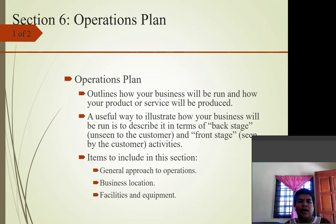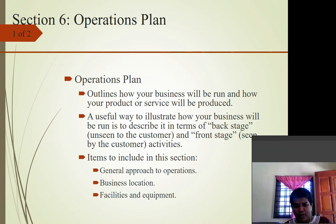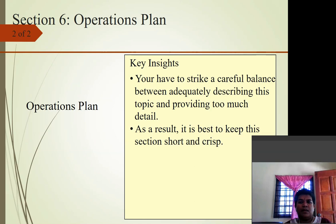Section six is the operational plan, which outlines how your business will be run and how your product or service will be produced. A useful way to illustrate operations is to describe them in terms of backstage activities — unseen by the customer — and front-stage activities visible to the customer. Items to include are: general approach to operations, business location, and facilities and equipment. Strike a careful balance between adequately describing each topic and providing too much detail; keep this section short and simple.